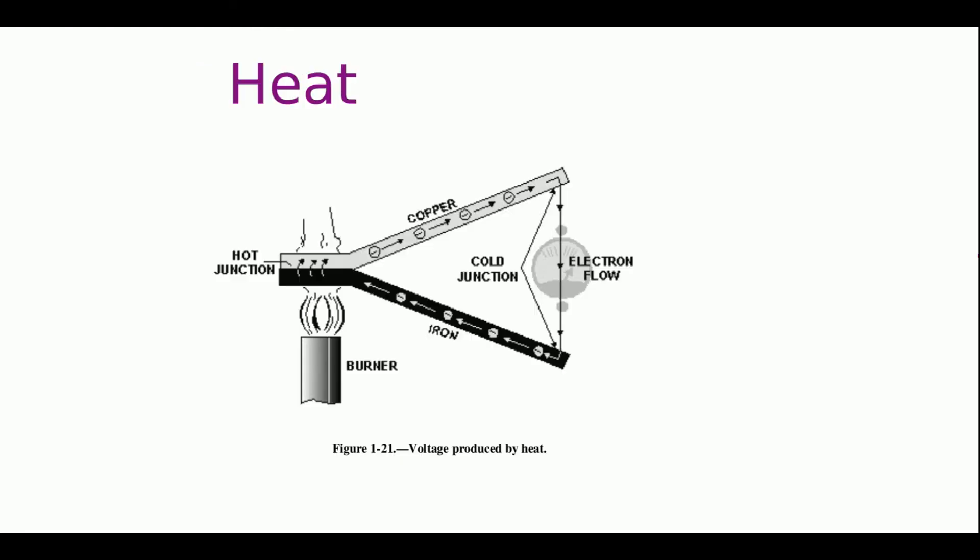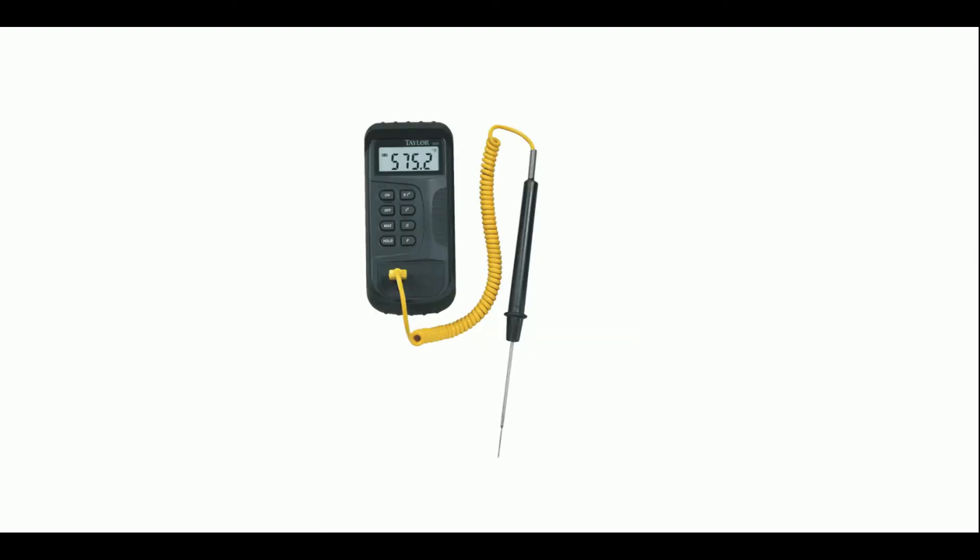Heat works on the principle that when you take two dissimilar metal rods and fuse them, when you put heat on the fused area, electrons will flow from one bar to the other one. And here we got electrons flowing from iron to copper, and this is how most of the thermometers, digital thermometers, work on board the ship, using this principle, like the one that I got here in the example. This is the one that you will be using to check the deep fryer temperature.